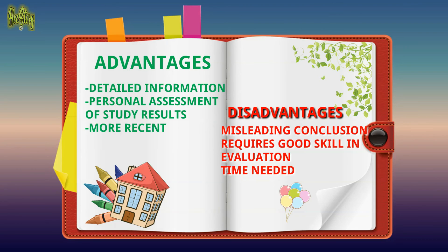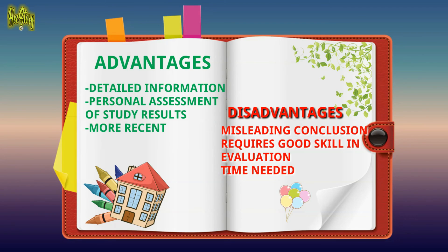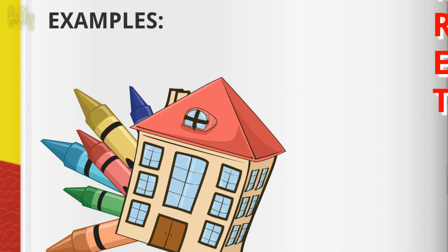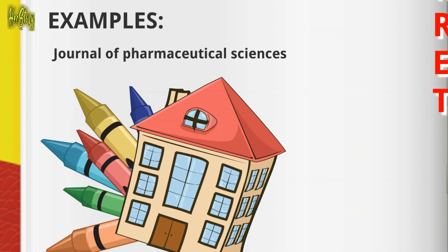The disadvantages of primary resources are: conclusions can be misleading, especially if the resource is not well-constructed. They also require good skills in evaluating the resource — the evaluator must have knowledge to assess whether the procedures and methodology of the study were correctly conducted. Additionally, they require a long amount of time to read and evaluate.